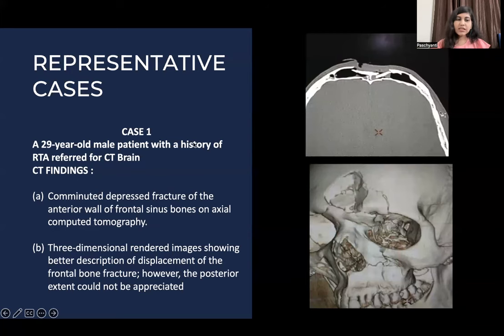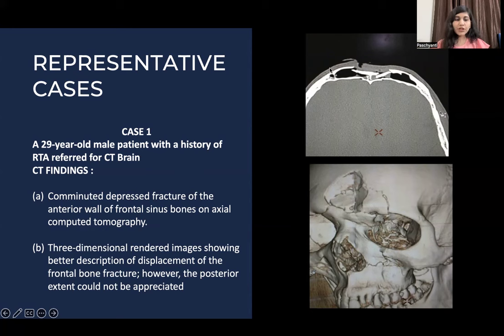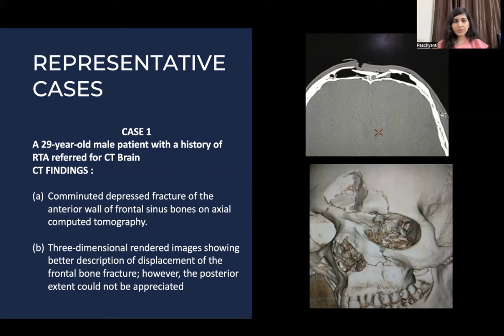Case 1: A 29-year-old male patient with a history of RTA was referred for CT brain. Comminuted depressed fracture of the anterior wall of the frontal sinus bones is seen on axial CT. The 3D rendered images show better description of the displacement of the frontal bone fracture; however, the posterior extent could not be appreciated.